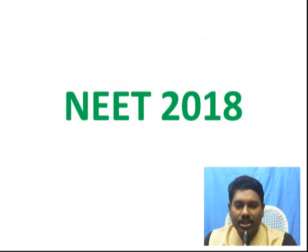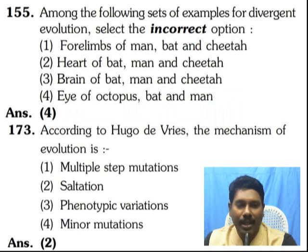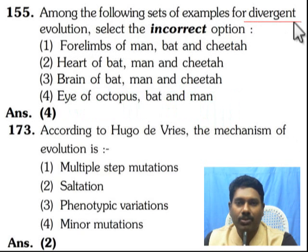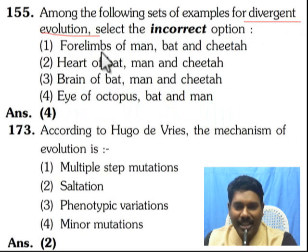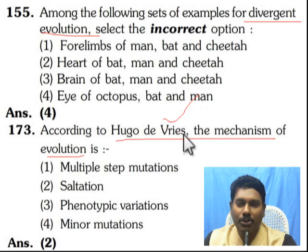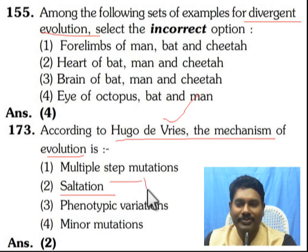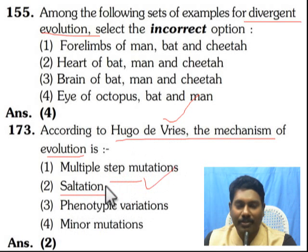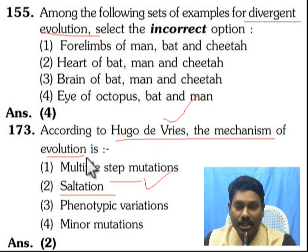Next, in 2018, the topic was: among the following set of examples for divergent evolution. Divergent evolution was a question. The mechanism of evolution is mutation according to Hugo de Vries — the mechanism of evolution is saltation. Random and directionless mutation driving evolution was also a question.